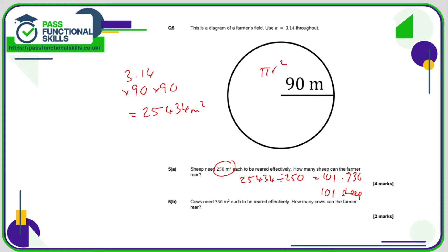Even though 101.736 is closer to 102 than 101, if the farmer puts 102 sheep in he's exceeded the 250 square metres per sheep required. For part B, we divide by 350 instead, giving 72.6 recurring cows — obviously you can't put two-thirds of a cow in the field, so that's just 72 cows.